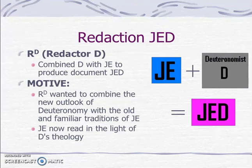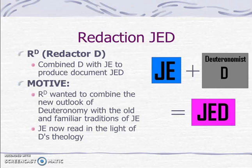Then comes Redactor D, who combines D with J.E. to produce a new document, J.E.D. The motive for doing so was to combine the new outlook of Deuteronomy with the old and familiar traditions of J.E., so that J.E. was now read in the light of Deuteronomy's theology.